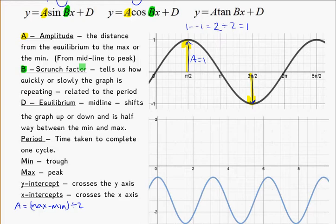And this just tells us whether the graph, the scrunch factor, is basically kind of telling us, do I have a nice, slow motion graph, or do I have a really frantic, fast-paced graph?